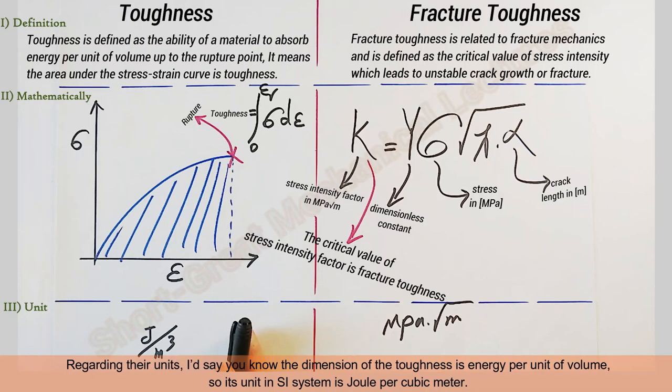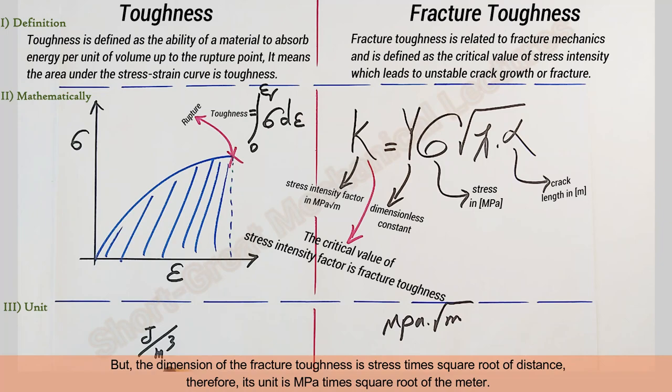Regarding their units, the dimension of toughness is energy per unit of volume. So its unit in SI system is joule per cubic meter.